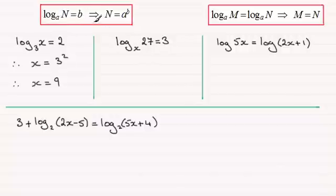So in this example x then corresponds with the a, n is the 27 and b is the 3. So we should be able to say then that 27 will equal the base which is x raised to the power 3. 27 equals x cubed.